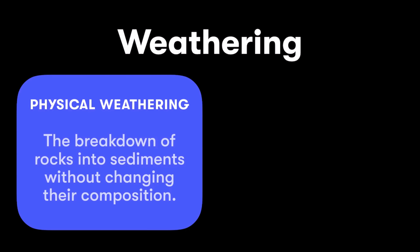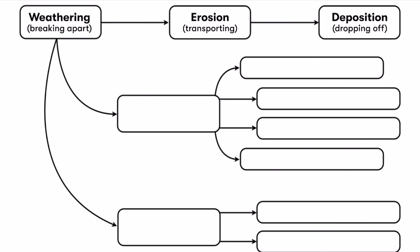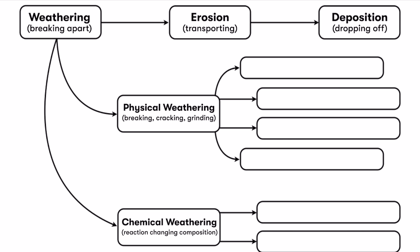Waves crashing against a boulder and breaking it into small rounded pebbles — that's physical or mechanical weathering. It's still granite; it's not changing what the rock is made of. But rocks can also change chemically, and we have a different name for that: chemical weathering. This is when rocks are changed chemically because of some reaction with usually air or water — the altering of rocks as a result of exposure to different substances. So we're breaking weathering into physical weathering, which involves breaking, cracking, and grinding, and chemical weathering, which involves a reaction that changes composition.